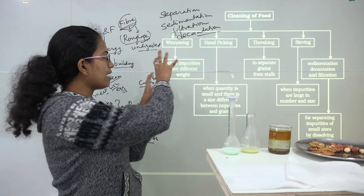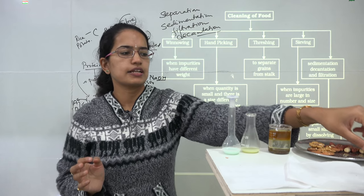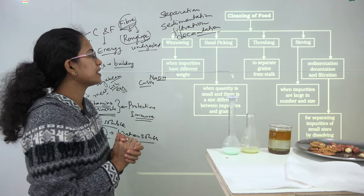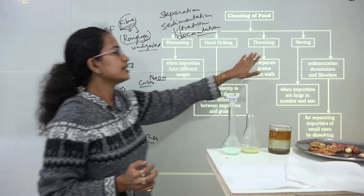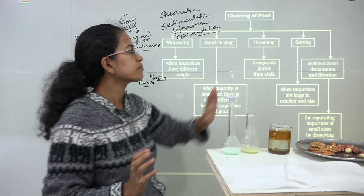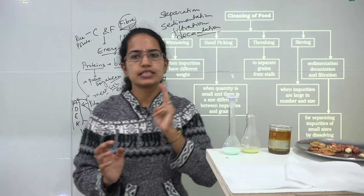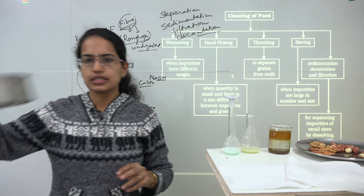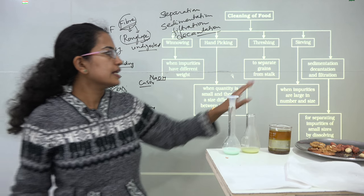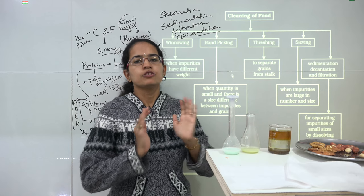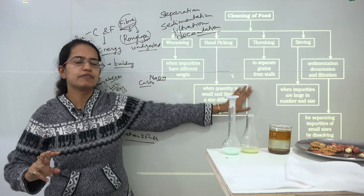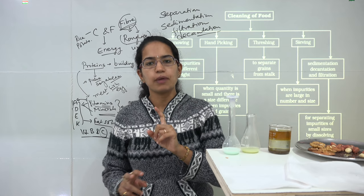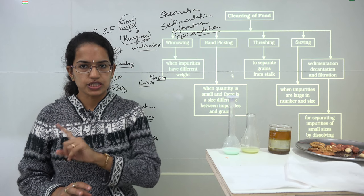In summary, food can be cleaned by: winnowing (separating impurities by weight), hand picking, threshing (separating stalks from grains), sieving (separating by size and number), and sedimentation, decantation, filtration, and separation. All of this has been introduced in the context of cleaning food here, and will be covered in further detail when discussing the separation of substances in Chapter 5.